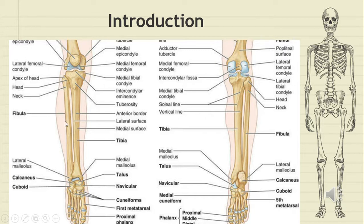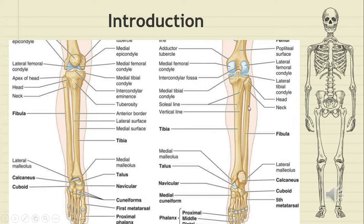Fibula is the posterolateral, thinner bone of the leg. Superiorly it is attached to the tibia on its lateral condyle by a synovial joint forming the superior tibiofibular joint. In the middle, the shafts are connected by a syndesmosis made by the interosseous membrane. Inferiorly the two bones are again connected by a syndesmosis and another interosseous ligament, and the fibular lower end completes the rectangular socket for the ankle joint. This bone is not for weight bearing; weight transmission is mainly through the tibia. The bone gives attachment to muscles, and as it is not involved in weight bearing, a piece of this bone can be used as a bone graft.